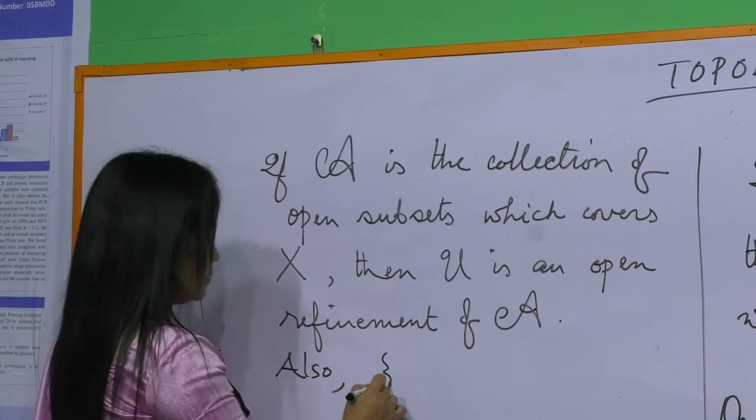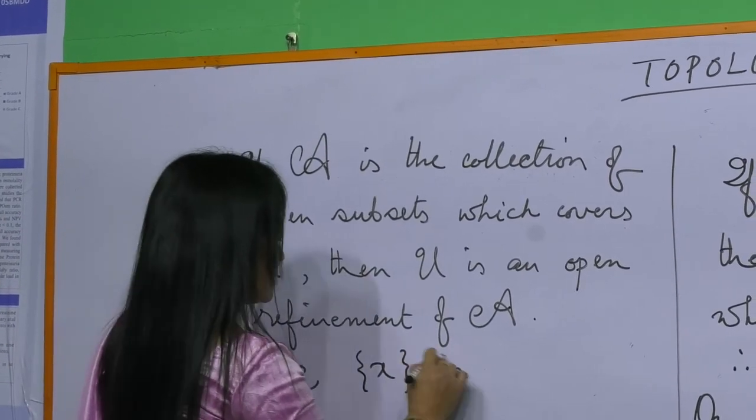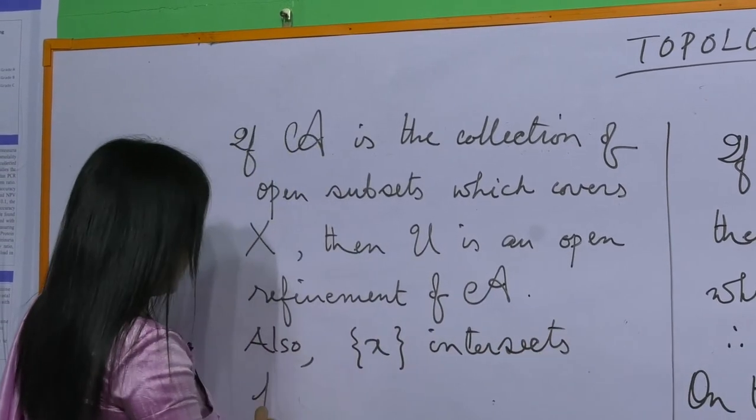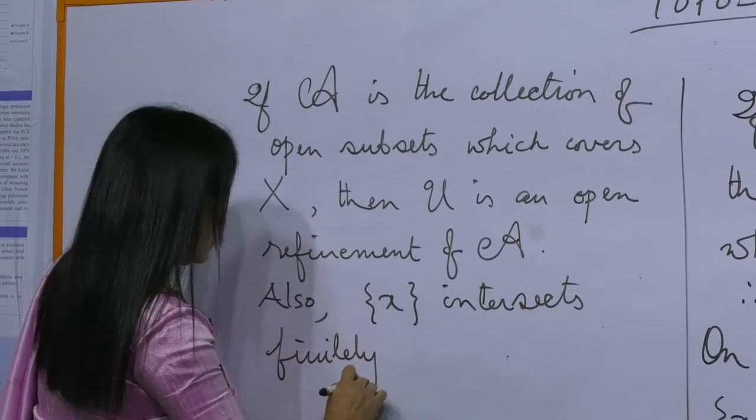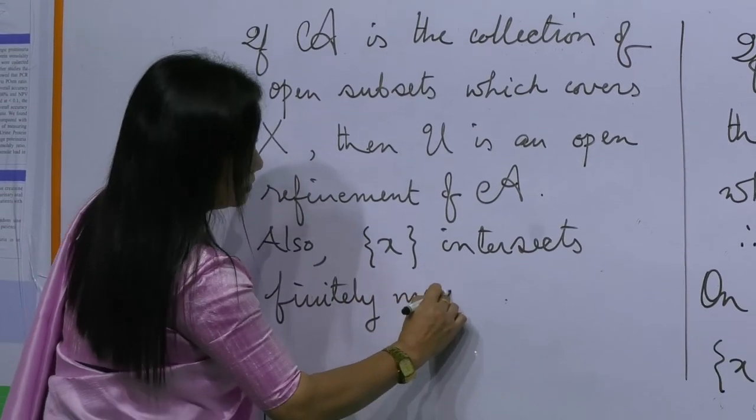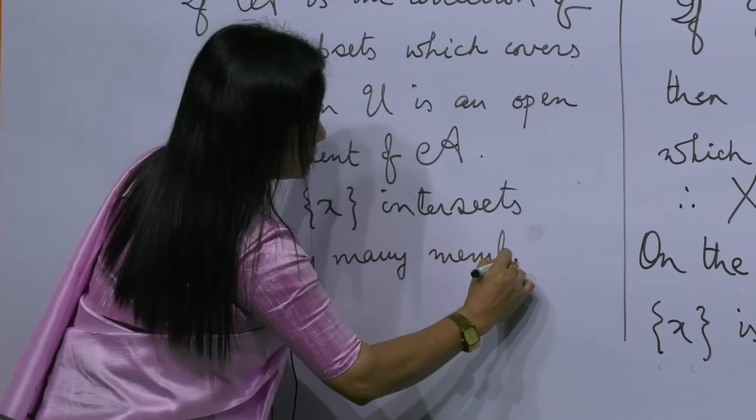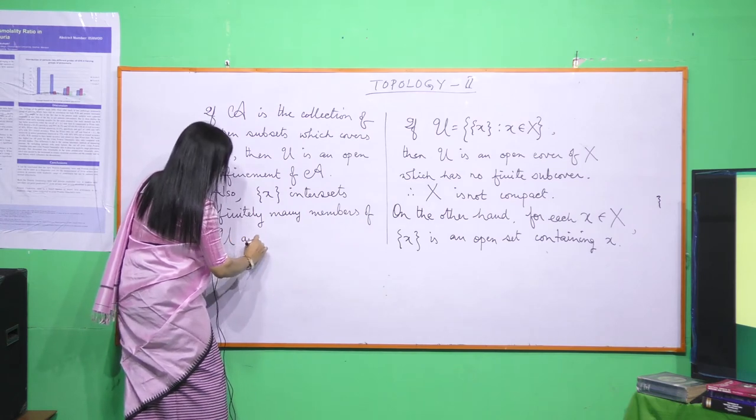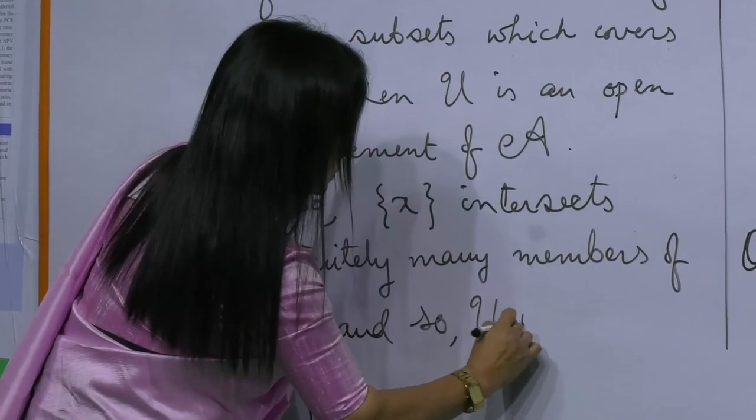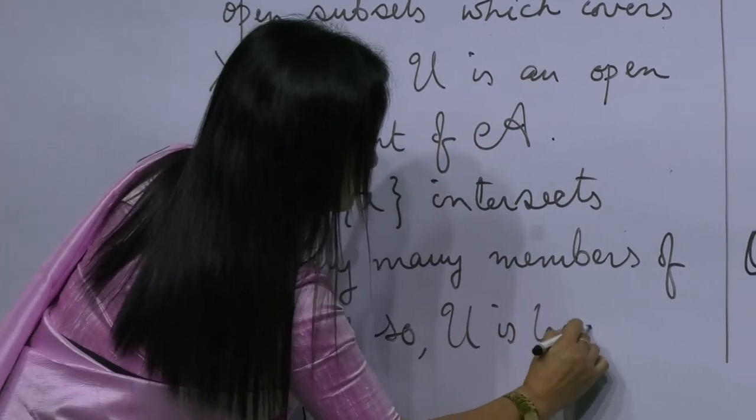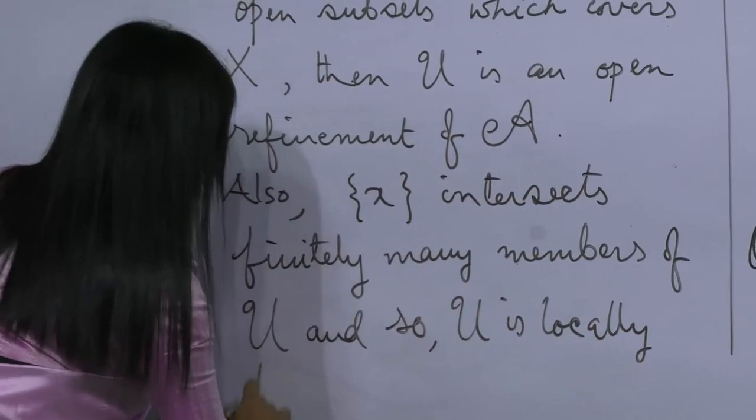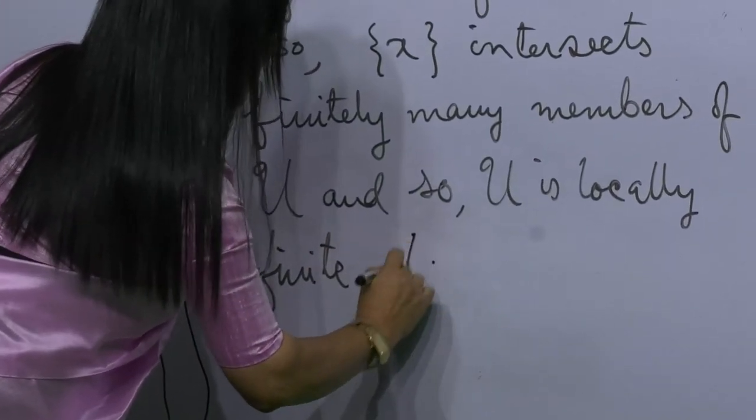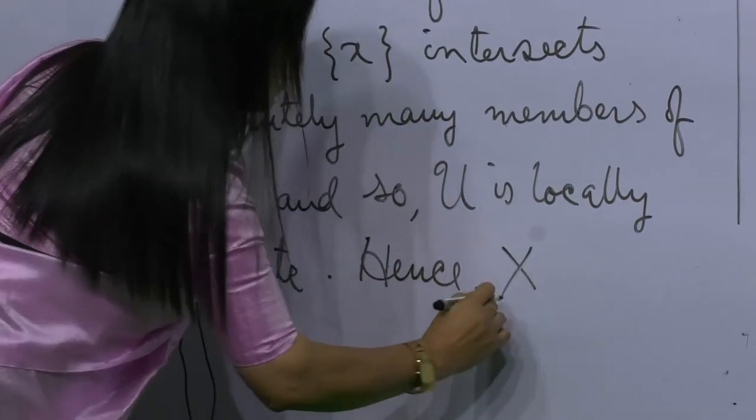Also, the singleton {x} intersects finitely with many members of U, and so U is locally finite which means that X is paracompact.